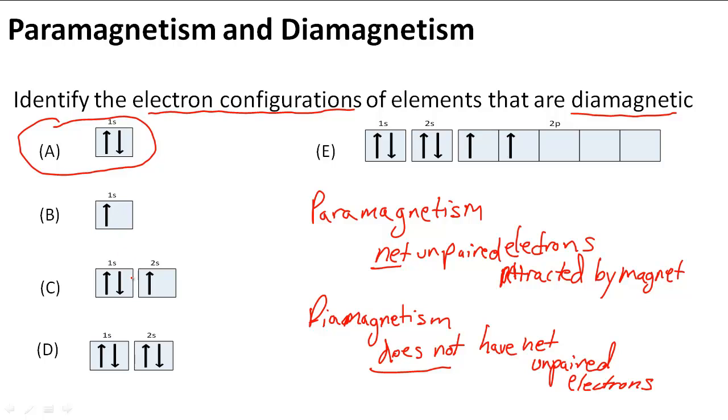And if I look at all the other ones, D also has pairs right there. So these both have pairs and they do not have net unpaired electrons. That means that A and D are the answers for this question.